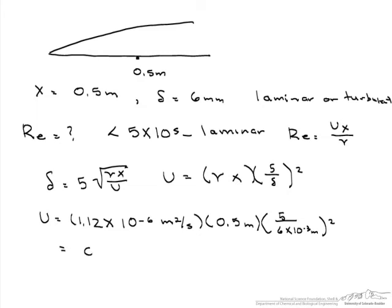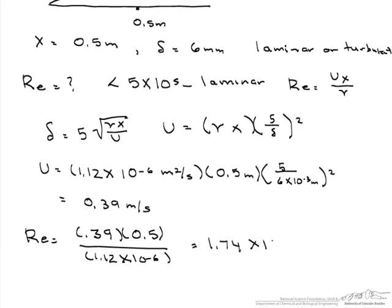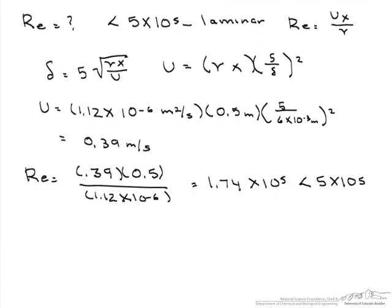So now we can check the Reynolds number, 0.39 meters per second times 0.5 meters, divided by 1.12 times 10 to the minus 6 meters squared per second, and we come out with a Reynolds number of 1.74 times 10 to the 5th, which is less than 5 times 10 to the 5th, so our flow is laminar.